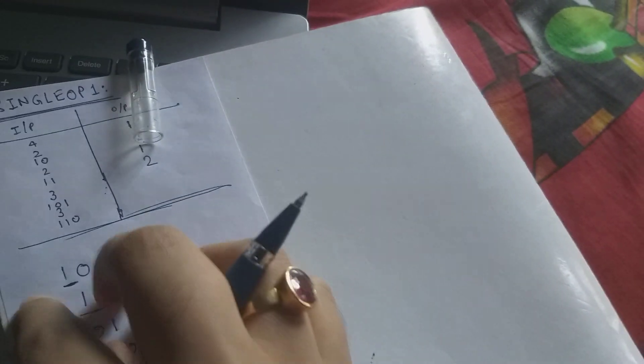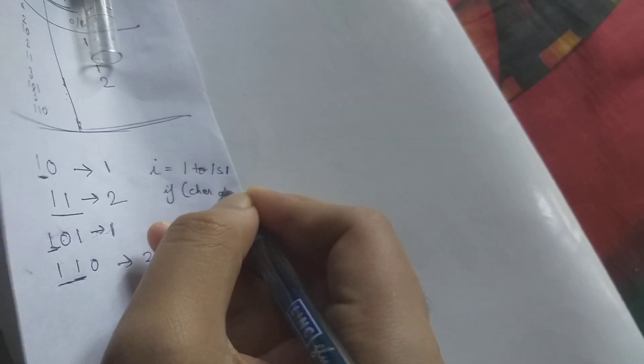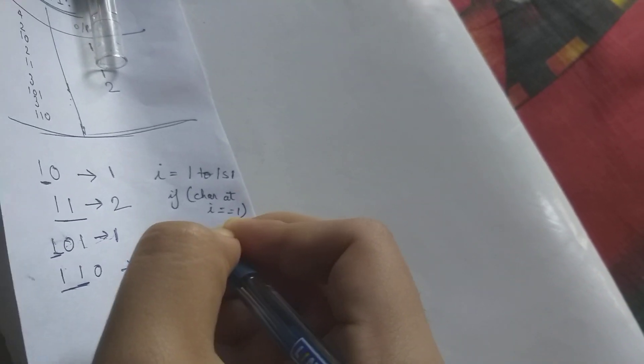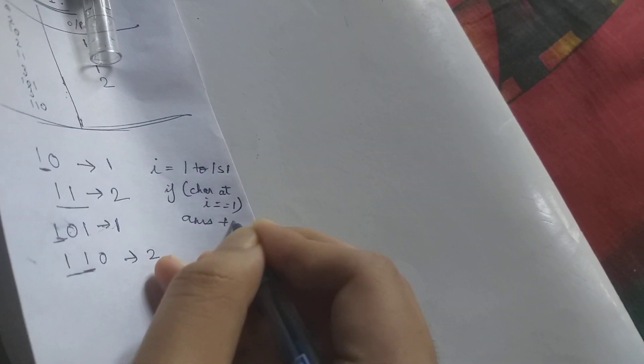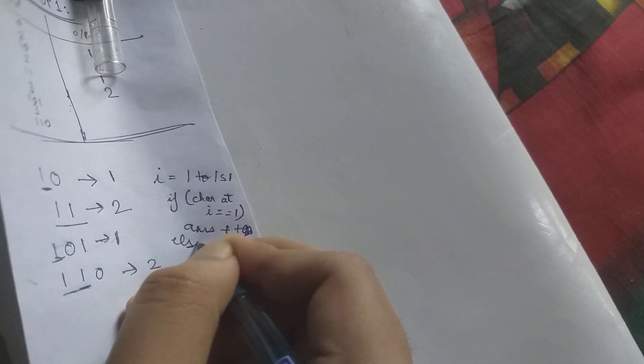So basically the thing the question demands is we have to run a loop from 1 to length of S and if the character at i is 1 then we have to increment the answer plus plus and else we have to break the loop. And the result will be the answer.